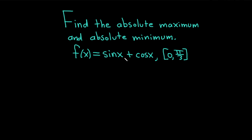Whenever you have a continuous function on a closed interval, there's something in calculus called the Extreme Value Theorem, which basically guarantees that you're going to be able to find an absolute maximum and an absolute minimum. Let's go ahead and work through it.